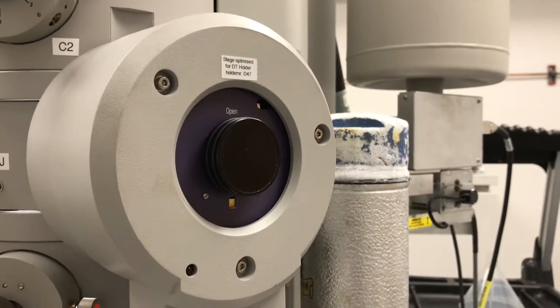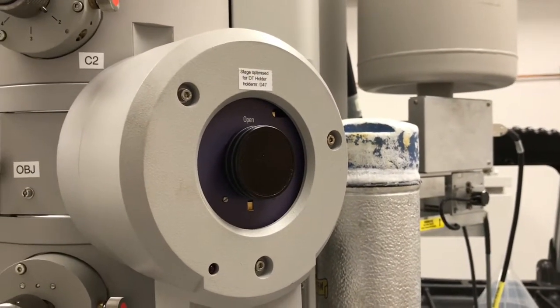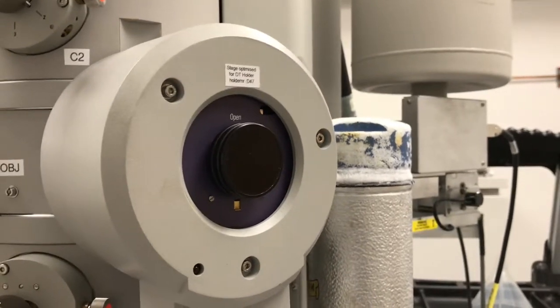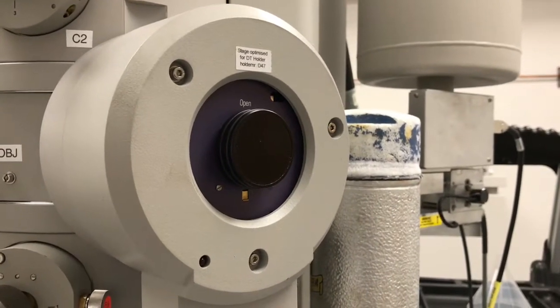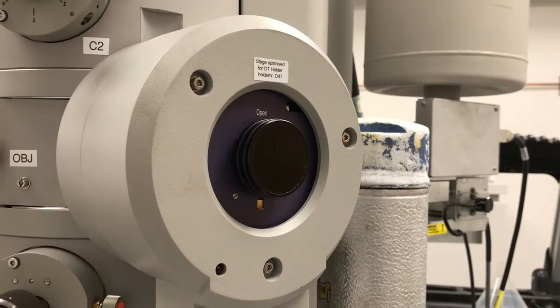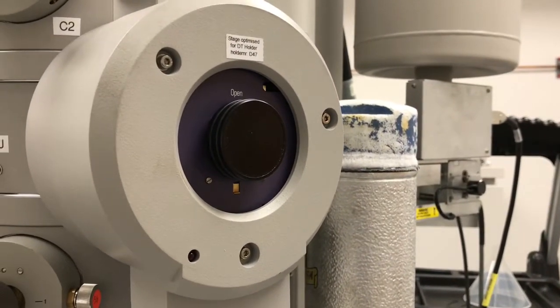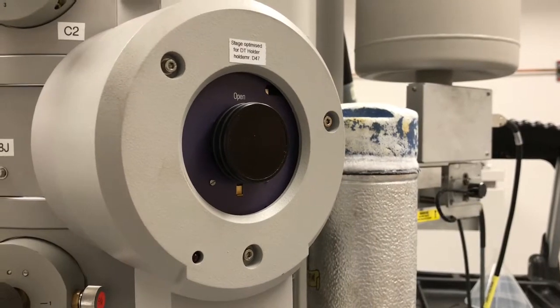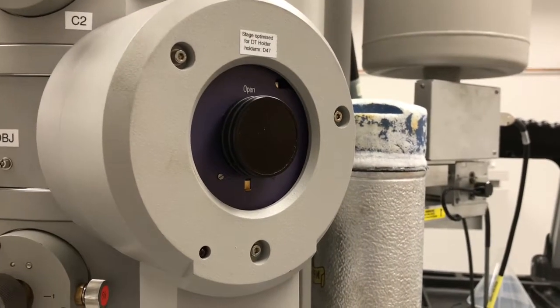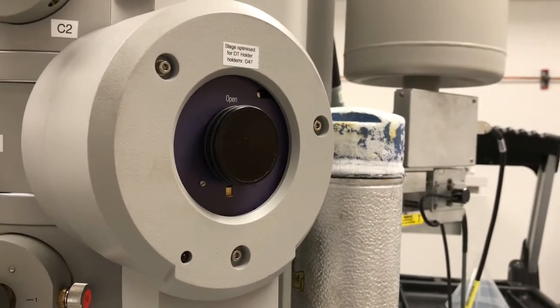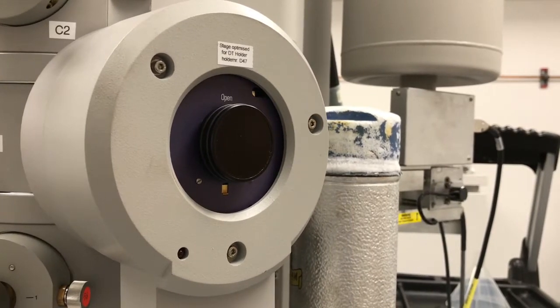We're going to start from the state that we currently have here, which is with the single tilt holder inserted into the column. We're just going to demonstrate this using the single tilt holder. It's essentially no different than if you were using the double tilt holder, but we're going to demonstrate this with a single tilt for purposes of simplicity.